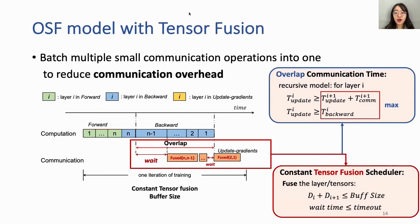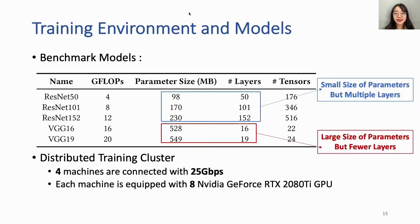We also extend our OSF model to tensor fusion. Our training environment includes five representative benchmark models: ResNet models have small parameter sizes but multiple layers, while VGG has larger parameter sizes but fewer layers. Our cluster includes four machines connected with 25 Gbps networks, each equipped with 8 NVIDIA GeForce RTX 2080 Ti GPUs. Our OSF model is not limited to our experiment cluster but can be extended to larger-scale distributed clusters.